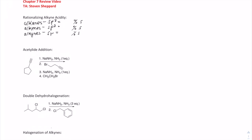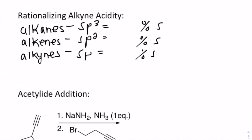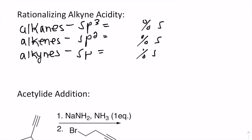The first thing we're going to talk about is alkyne acidity. Recalling Chapter 4 on acid-base organic chemistry, one of our trends for acidity was that the more S-character something has, the more acidic those protons will be. The rationale is that S-orbitals are relatively close to the nucleus compared to P-orbitals, so more S-character is equivalent to being more electronegative. Classifying the hybridizations of alkanes, alkenes, and alkynes: they are sp3, sp2, and sp.